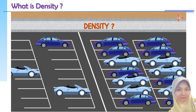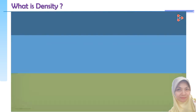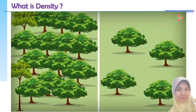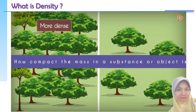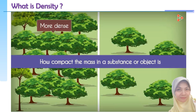Look at these two parking lots of the same size — one has three cars and the other has many cars. Which one is more dense? This one, correct? Yes. Now look at these two forests — which one is more dense with trees? Clearly it's this one. So in the same given amount of space, if there are more things, we say that it's denser. Density is simply the measure of how compact the mass in a substance or object is.